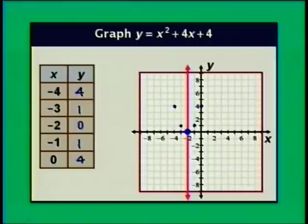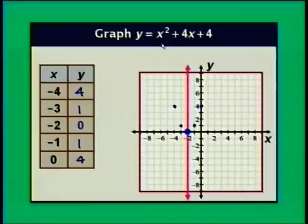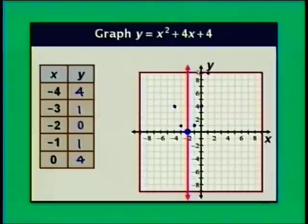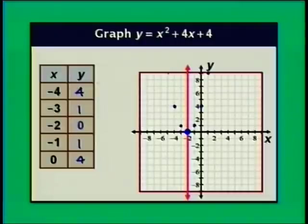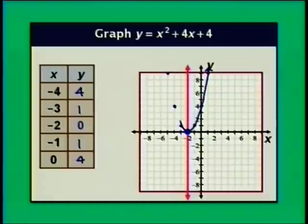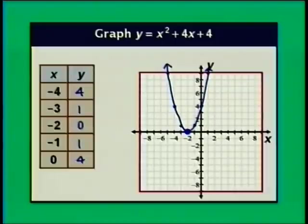Before sketching, let's check a few more points. When x is 1: y is 1 plus 4 plus 4 equals 9, giving point (1, 9). This is 3 units to the right of the axis of symmetry, so (negative 5, 9) is also on the parabola. After that the parabola goes off the grid. Erasing the axis of symmetry, the graph of y equals x squared plus 4x plus 4 looks like this.